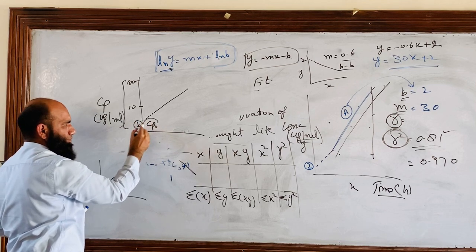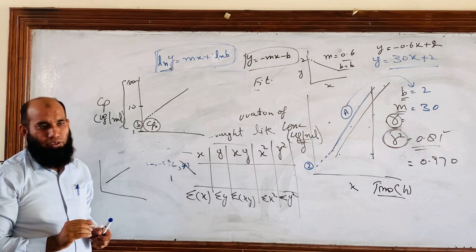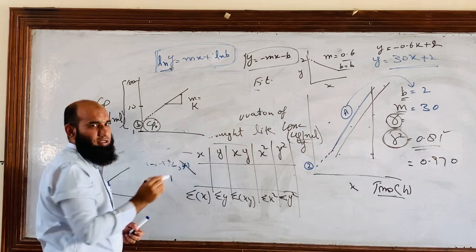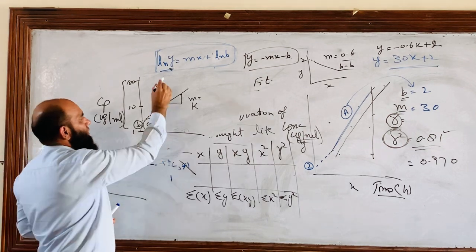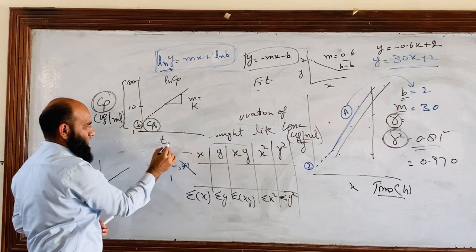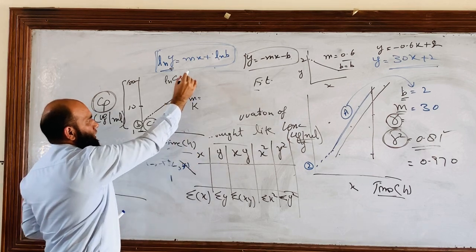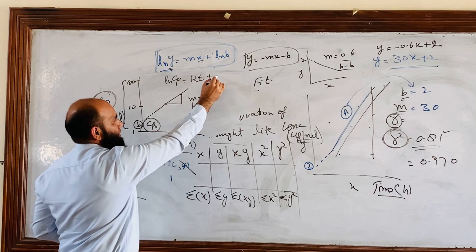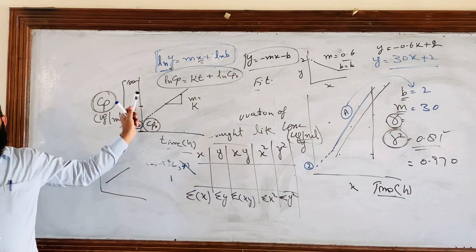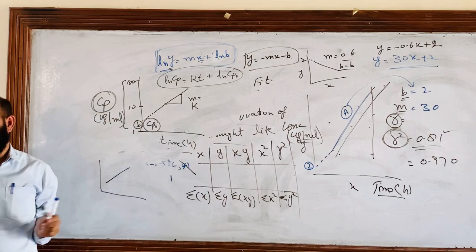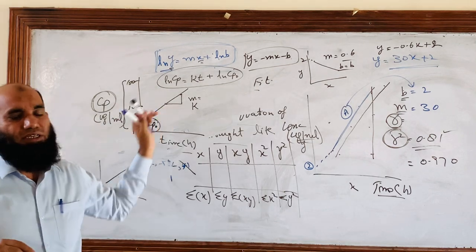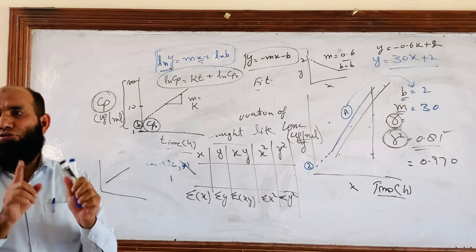When we have the y-intercept, it is actually b. But now we will say it is cp0 — initial plasma concentration. Here is slope; we will write m. But in pharmacokinetics, we will write Ka. So the equation is: ln cp, plasma concentration on y-axis, is equal to k times t, where t is time in hours, plus ln cp0. We will see in different books this equation for the first order rate constant and for pharmacokinetics: ln c is equal to kt plus ln cp0.